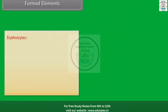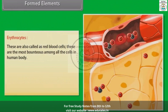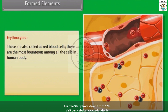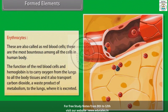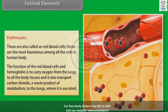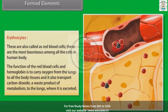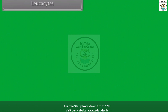Erythrocytes, also called red blood cells, are the most abundant among all the cells in the human body. The function of red blood cells and hemoglobin is to carry oxygen from the lungs to all body tissues, and also to transport carbon dioxide, a waste product of metabolism, to the lungs where it is excreted.